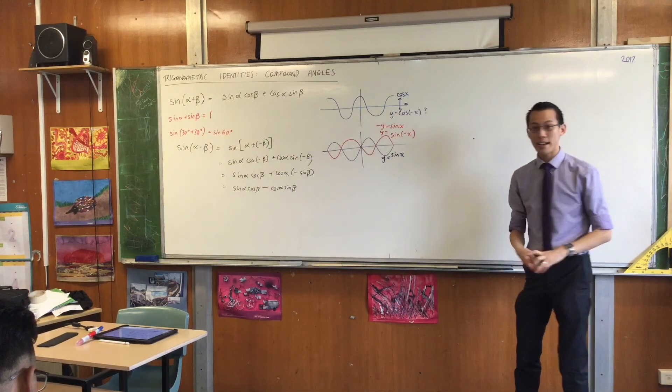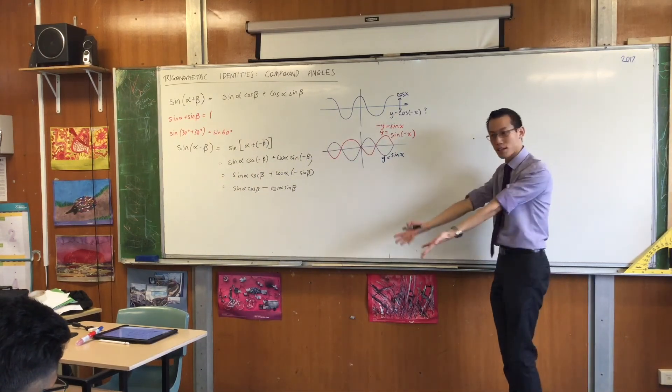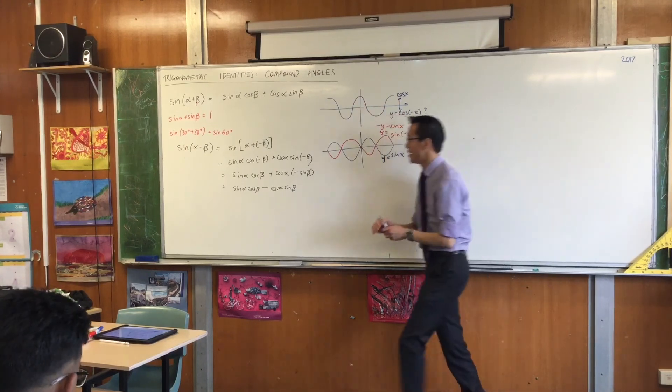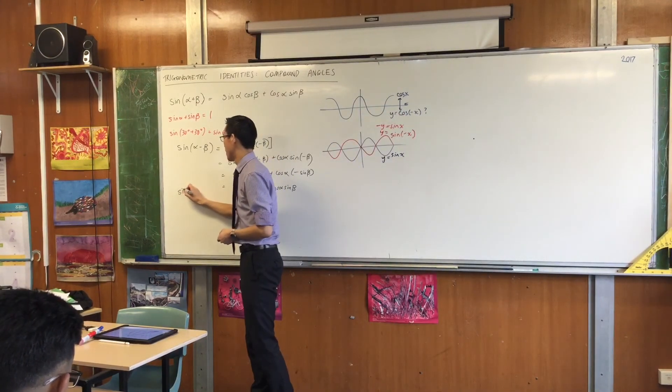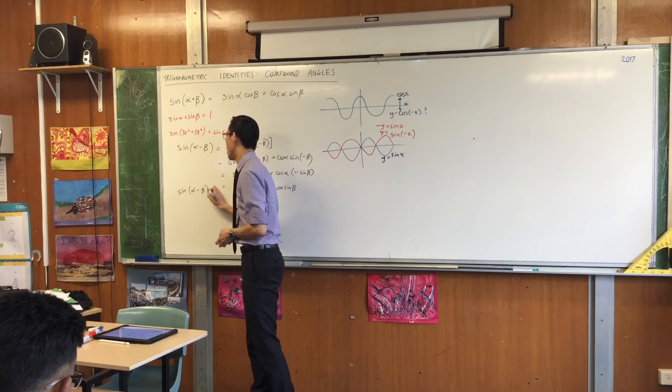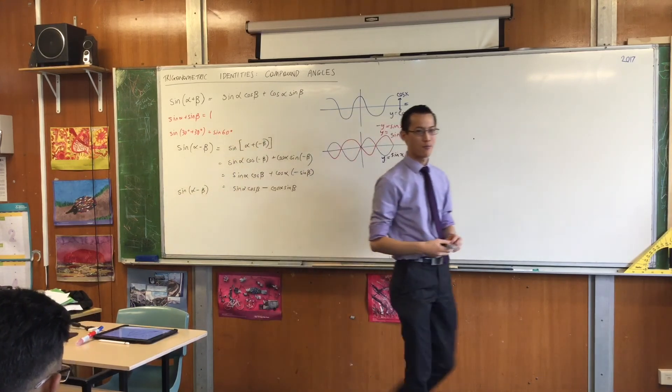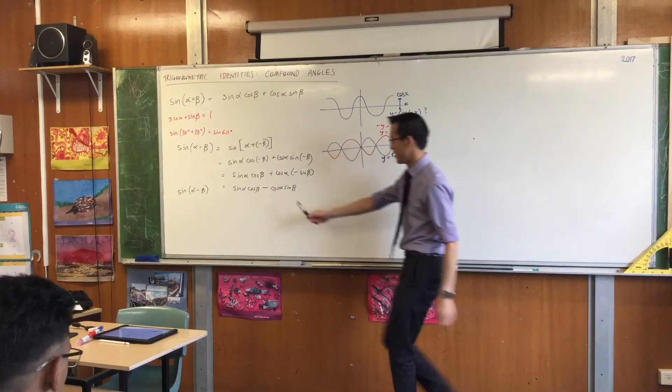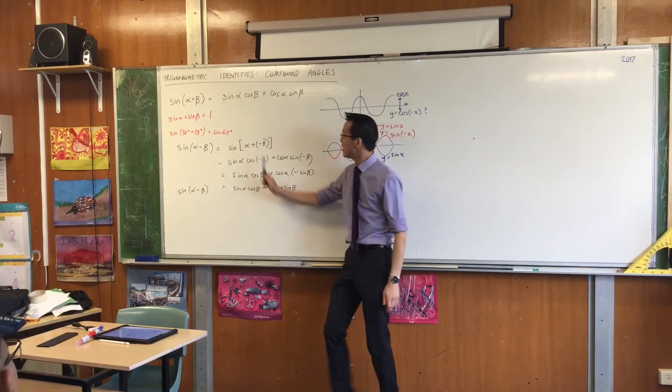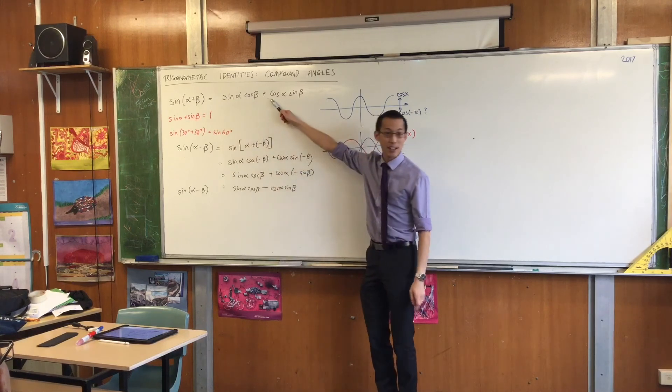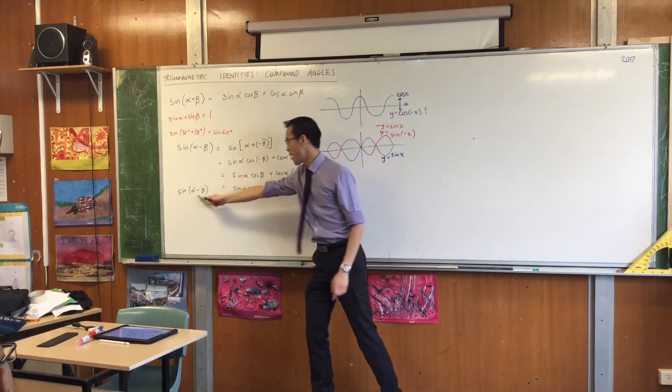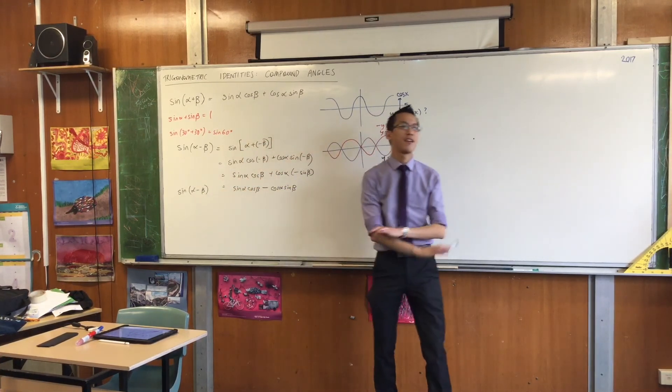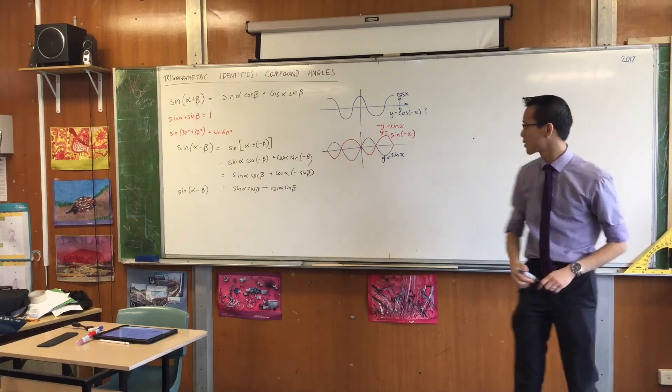So, the trig identity for sine alpha plus beta, looks like that. The trig identity for sine alpha minus beta only differs in one way. What is it? Conveniently, it's just this minus sign right here. Do you see that? So, see how this plus parallels to a plus? Or this minus parallels to a minus? So, everything else is the same.